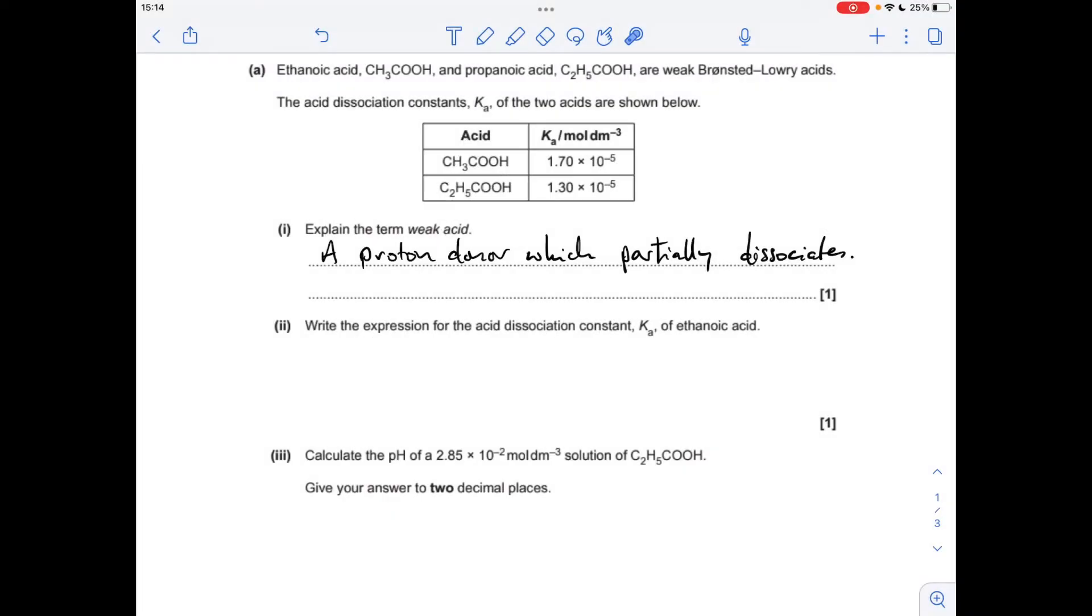A weak acid is a proton donor, which partially dissociates. The expression for the acid dissociation constant of ethanoic acid - you can see I've written up the dissociation equation there. You've got to write this in full, you can't do the abbreviated version with your H plus concentration squared over concentration of ethanoic acid. It has to be all of the formulae.